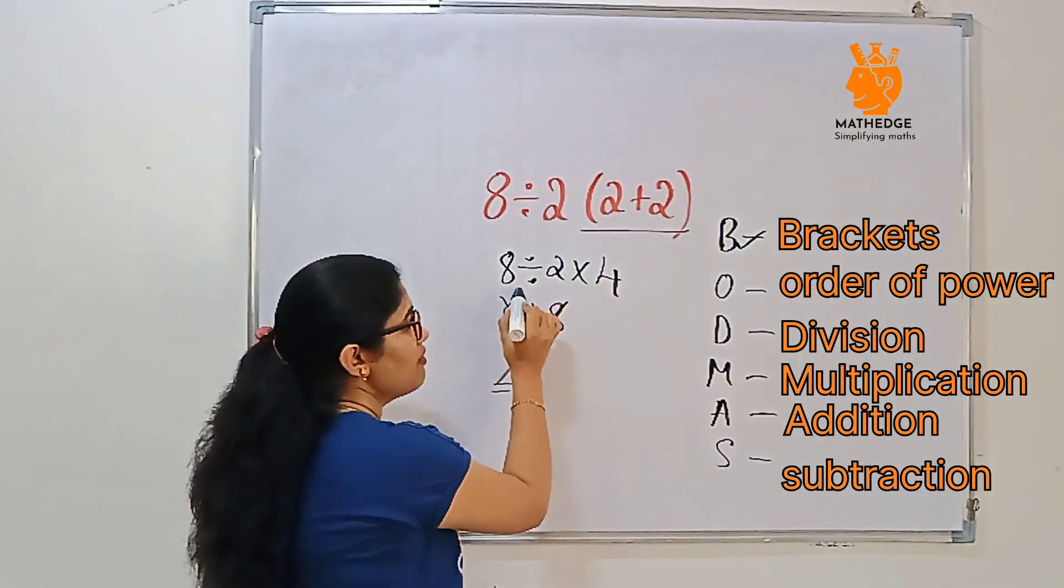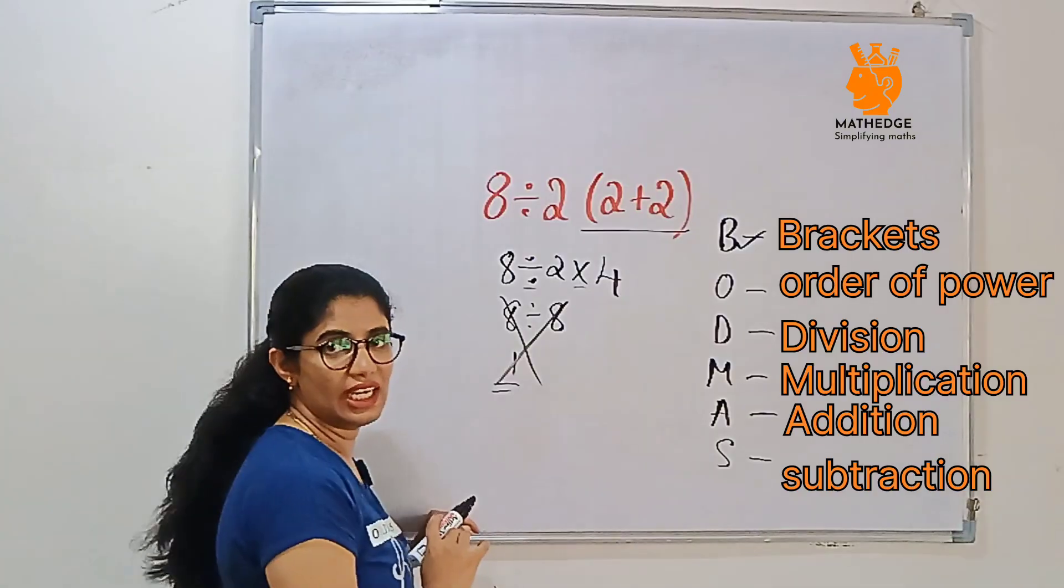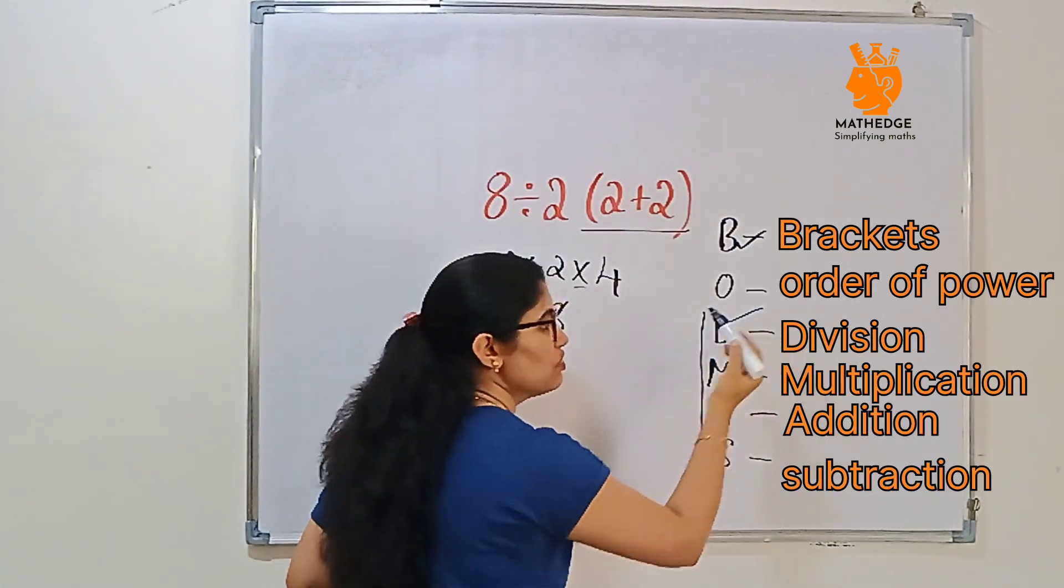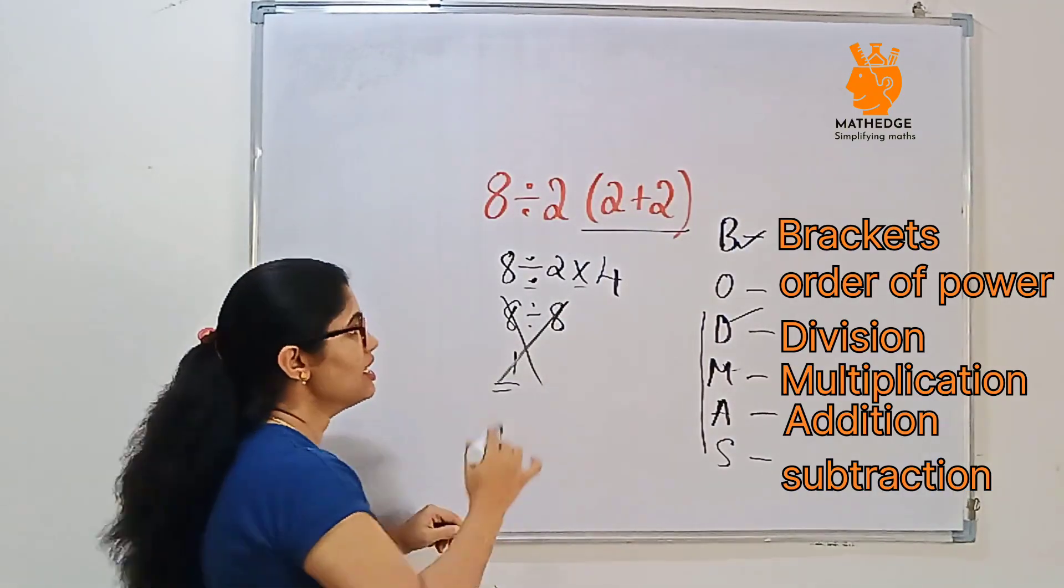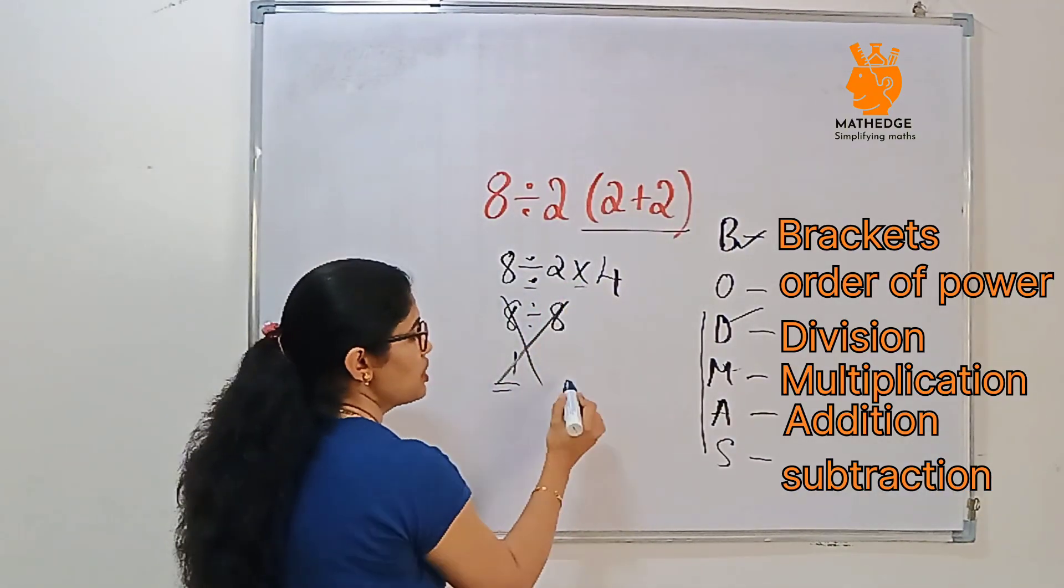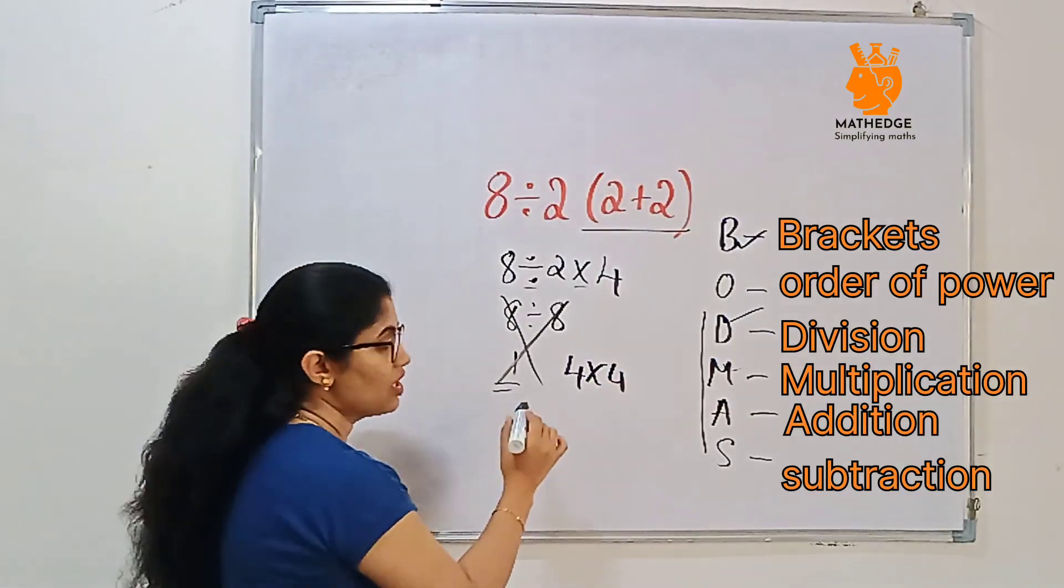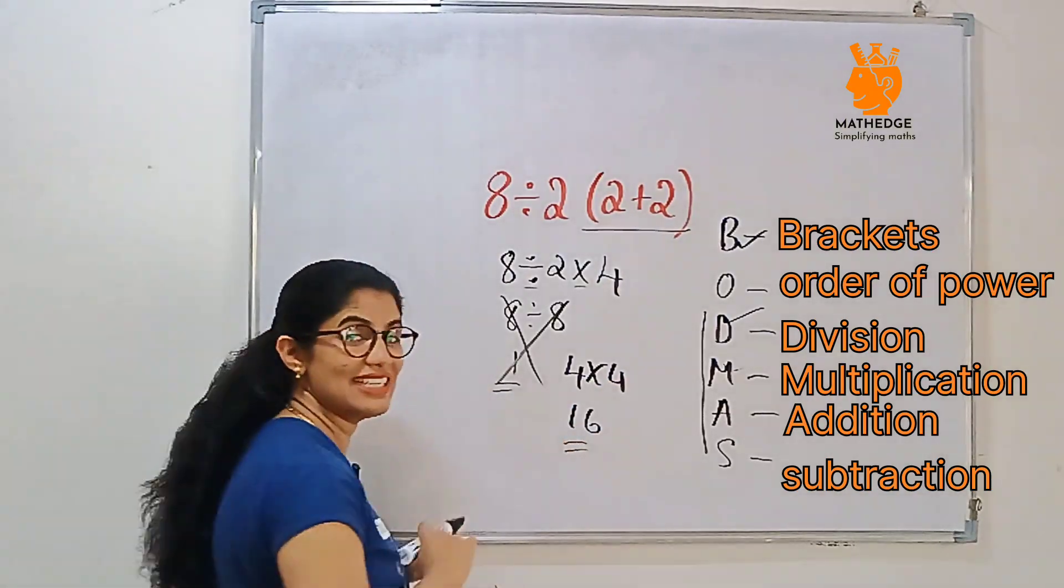What's the correct way to solve this? First, observe here. We have here division and multiplication. But according to BODMAS, first we should go with division, then after multiplication, right? First we should do division. 8÷2 is 4, then write the multiplication symbol 4. 4×4 is 16. This is our answer.